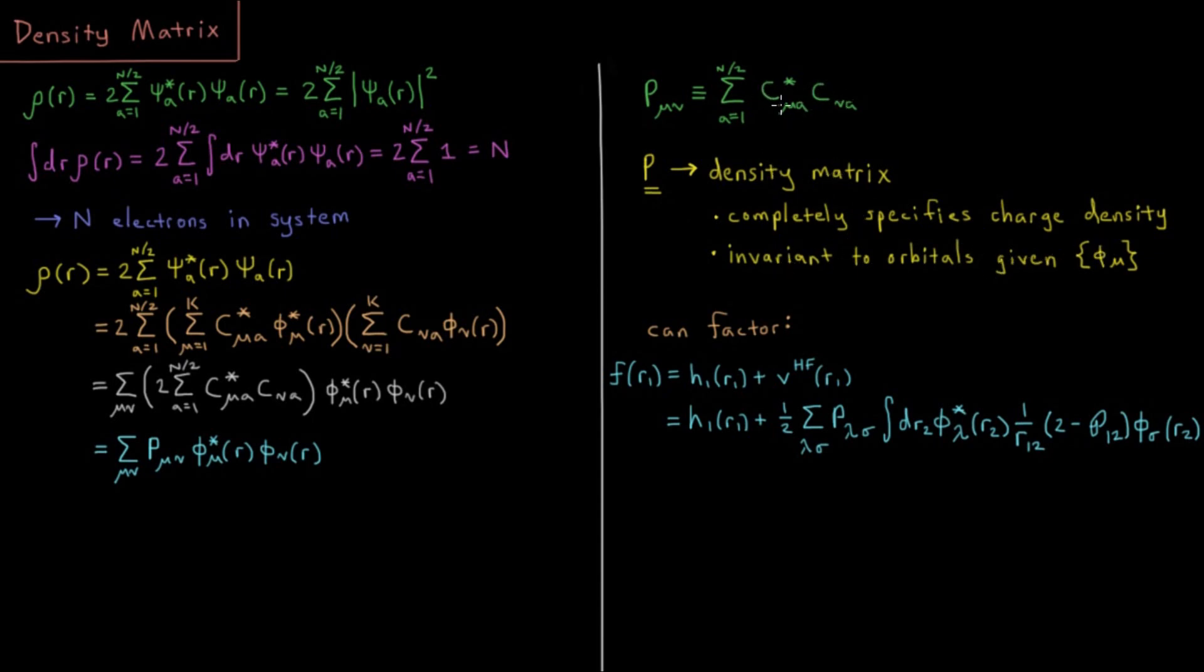We can transform the orbitals as we like with any sort of unitary transformation, but this aggregate multiplication and sum over all of these occupied orbitals, just as a lot of other properties were invariant with respect to the choice of orbitals, so too is our density matrix invariant to our orbitals for a given basis set. All we need to do is get the charge density from these, and in fact the density matrix is sort of more real even than the coefficient matrix because those can be transformed in any way we like.